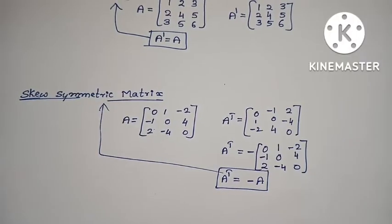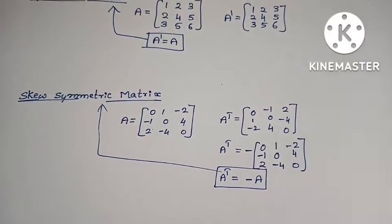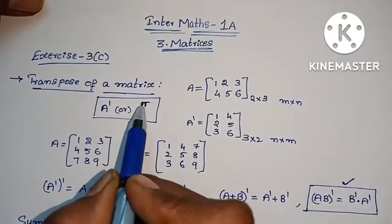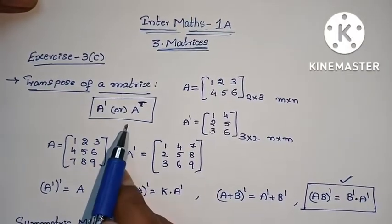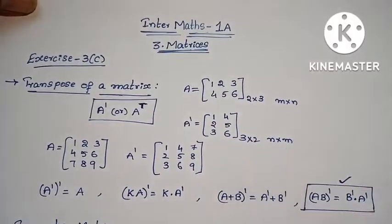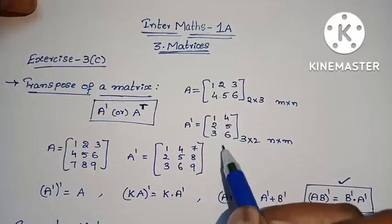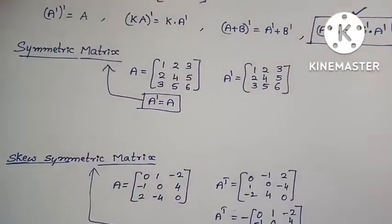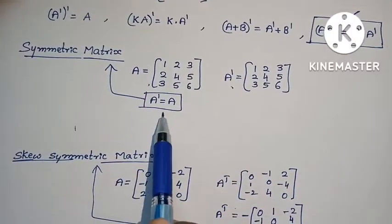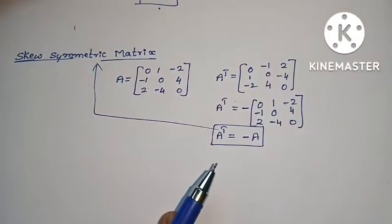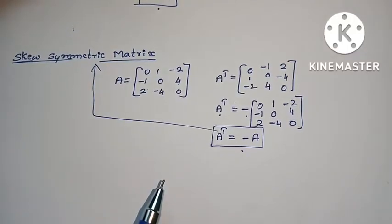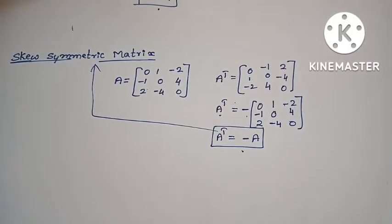This equals A. Transpose of a matrix: rows become columns. For a symmetric matrix, A transpose equals A. For a skew symmetric matrix, A transpose equals minus A.